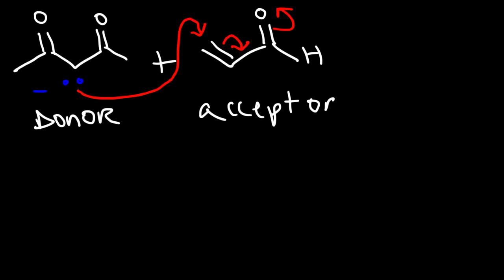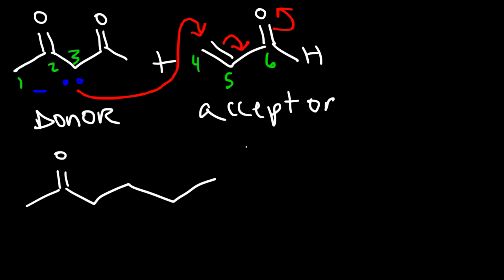Counting the longest chain: carbon 1, 2, 3 — and carbon 3 attacks the beta carbon, which becomes carbon 4. We end up with a 6-carbon chain. On carbon 6 we have an oxygen with a negative charge and a double bond between carbons 5 and 6. On carbon 3 we have two additional carbons from the original enolate.